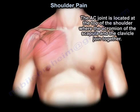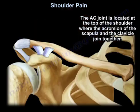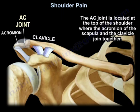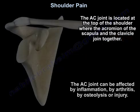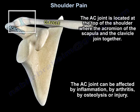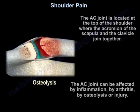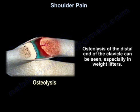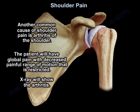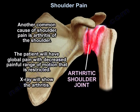The AC joint is located at the top of the shoulder where the acromion of the scapula and the clavicle join together. This joint can be affected by inflammation, arthritis, osteolysis, or injury. Osteolysis of the distal end of the clavicle can be seen especially in weight lifters. Another common cause of shoulder pain is arthritis of the shoulder. The patient will have global pain with decreased, painful range of motion, and the x-ray will show the arthritis.